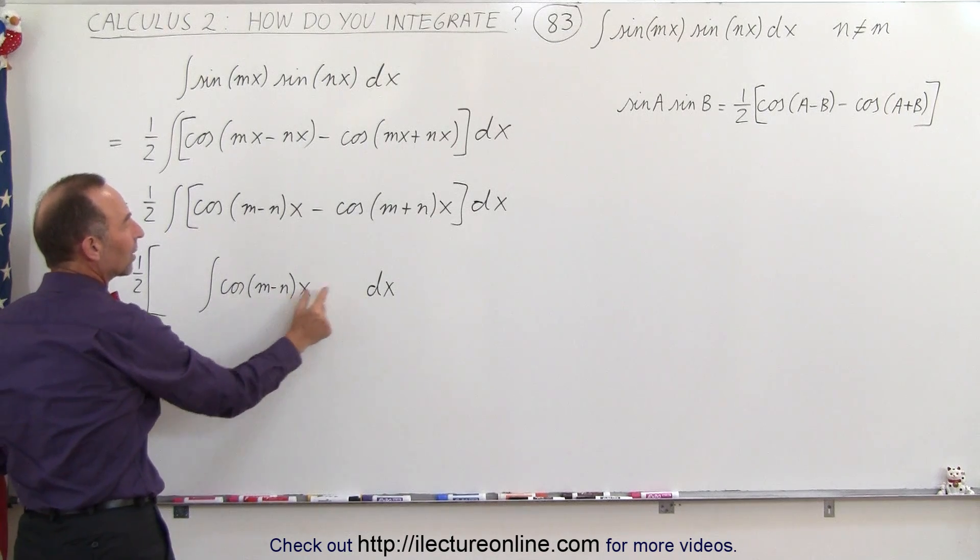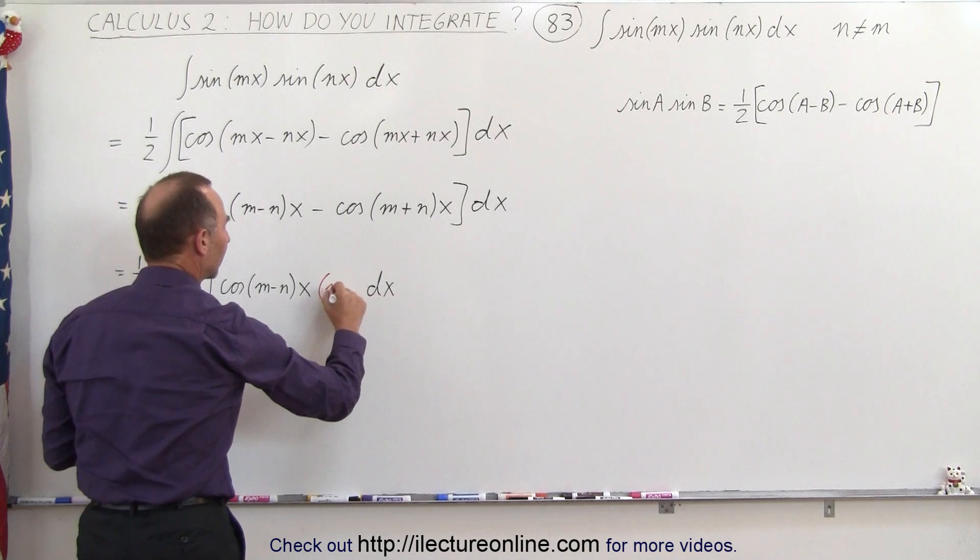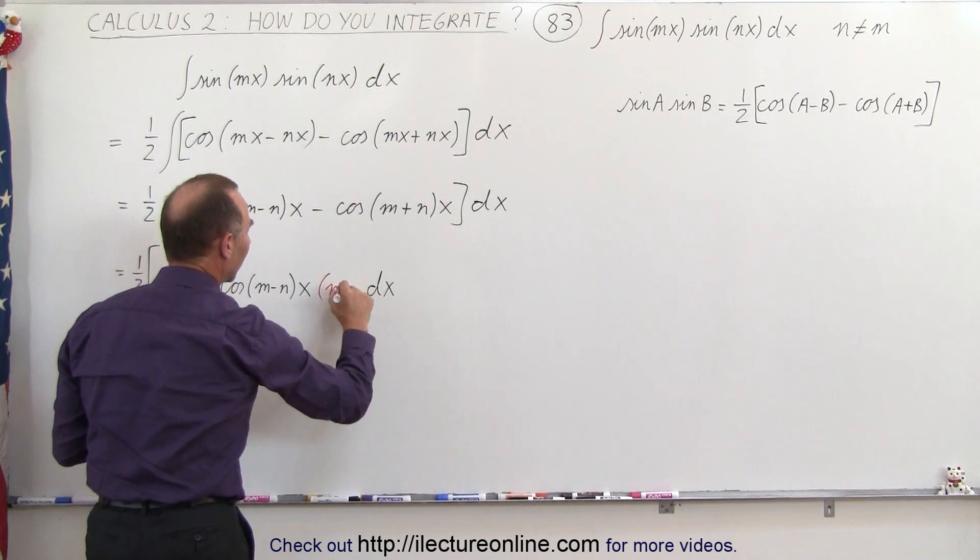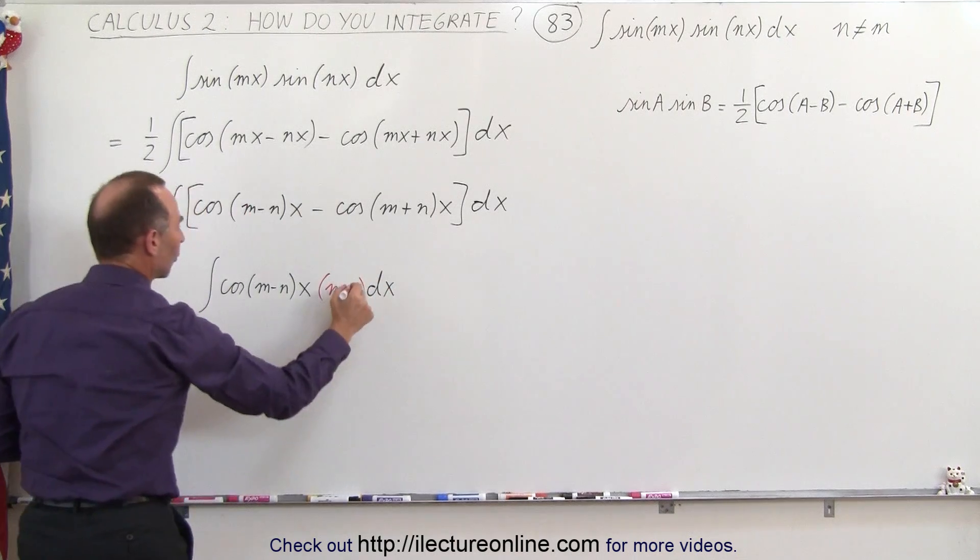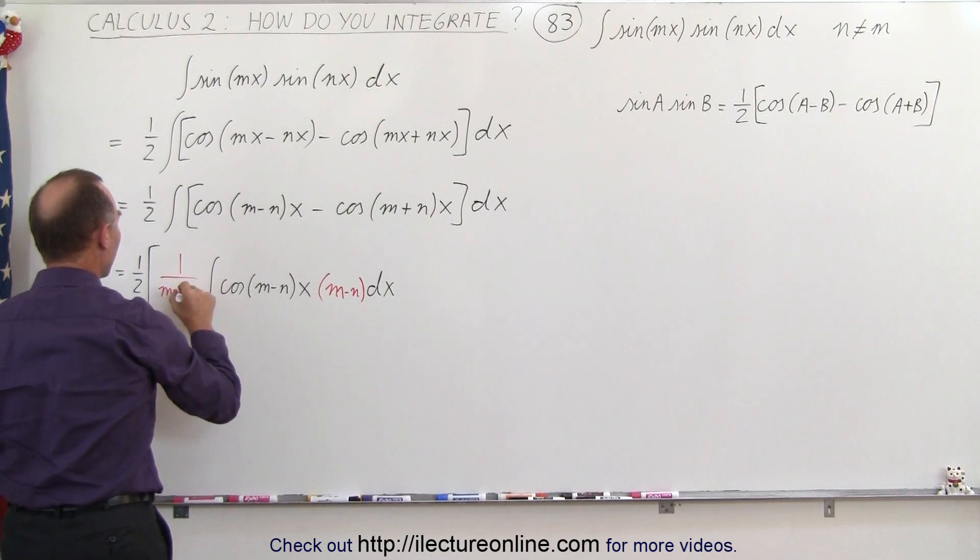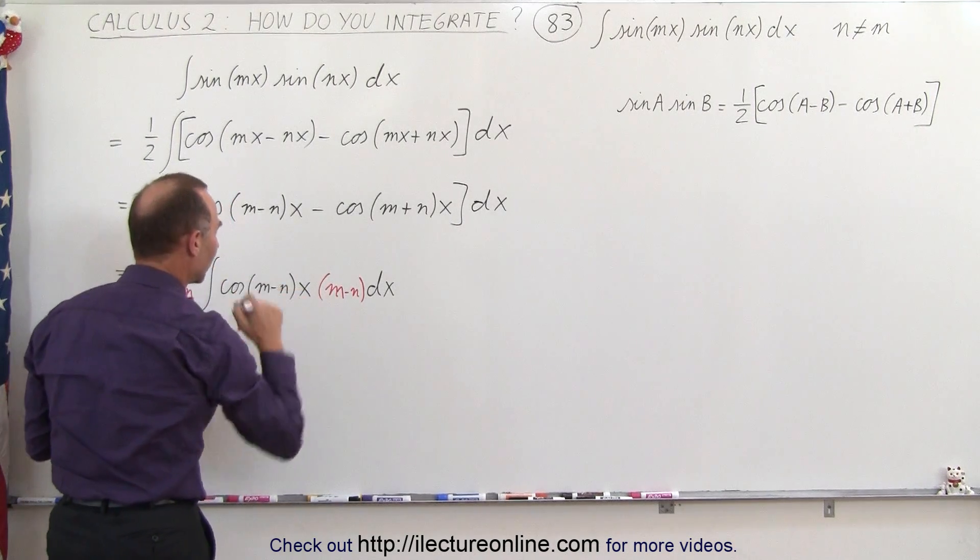Since we have that constant in here, we need that constant here again, and using a different color, I can write m minus n. When we multiply this times m minus n, we also have to divide it by m minus n. And so now we have the proper differential here, so we can integrate this.